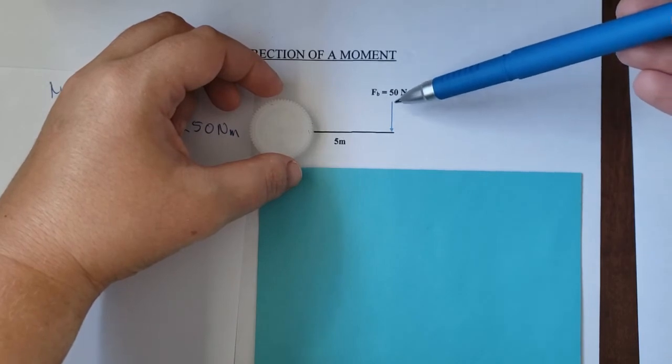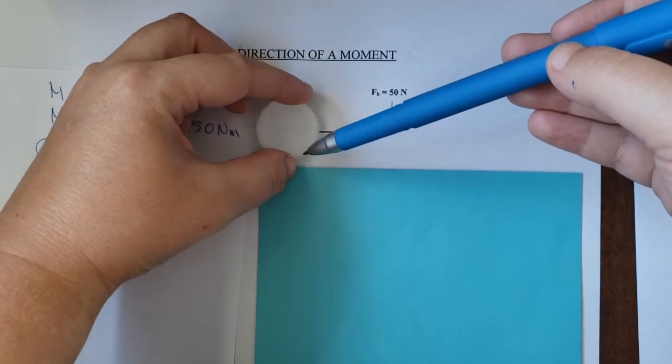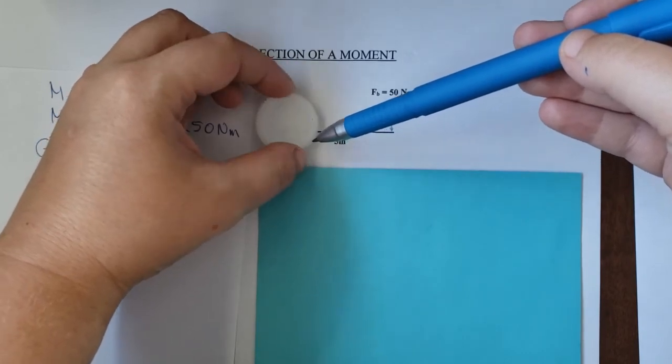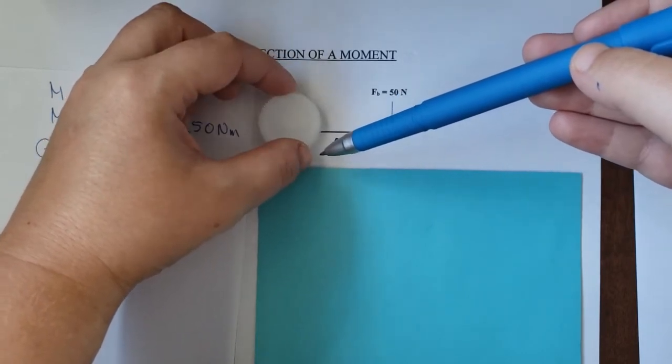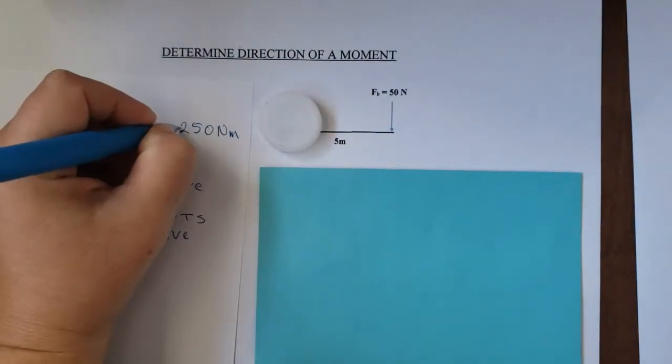And because this force is downward, imagine if it acts here on the cap. It will make this cap rotate clockwise, which means we have a clockwise or negative moment.